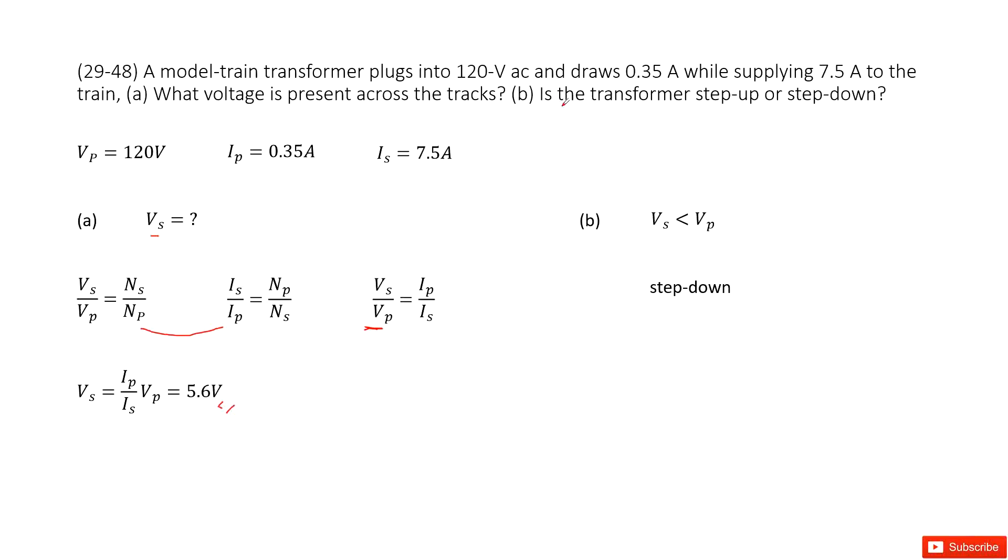The second part asks you is the transformer step up or step down. We can see Vs and Vp. Compare them: Vs is 5.6 volts, Vp is 120. So Vs is smaller than Vp.